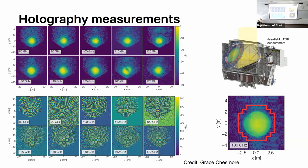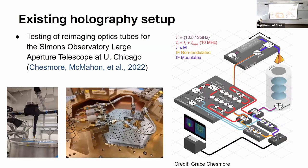This also involves measuring the complex field — both amplitude and phase — at the aperture of the optics tube. One such system already exists and has been used to test the optics tube for the large aperture Simons Observatory. However, it only operated in the frequency range of 90 to 180 GHz. One of the things we are trying to do right now in Iceland is to recreate that system and then push it further into higher frequencies.